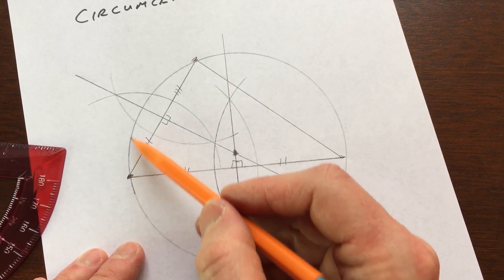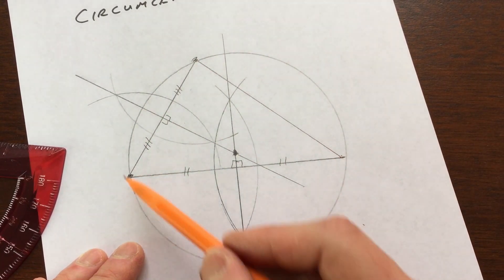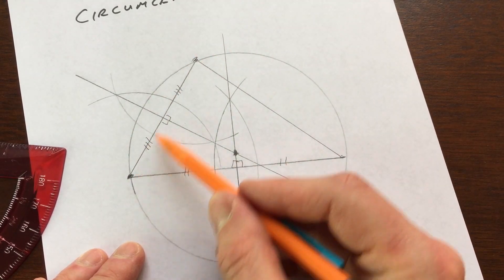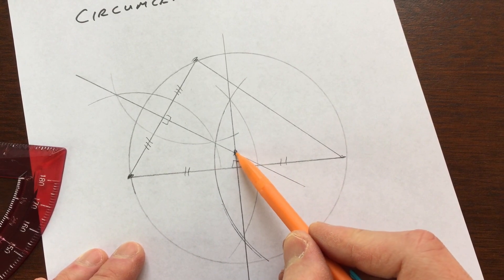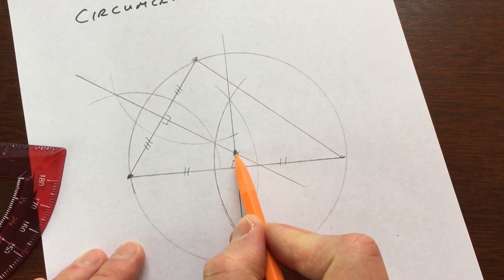So basically, what's happening is the circle is circumscribed around the triangle, the triangle is inscribed inside of the circle. But the reason they call this the circumcenter is because if you draw a line from this point to each of the vertices of the triangle,